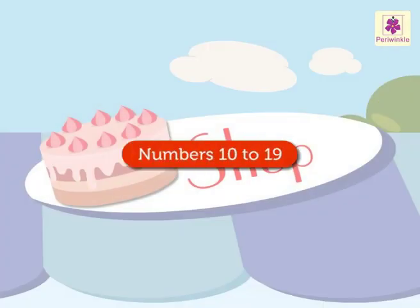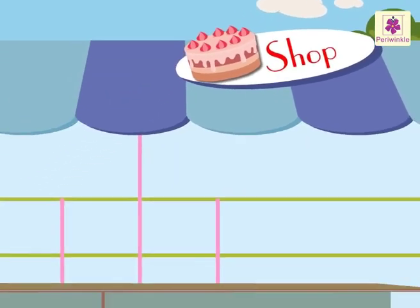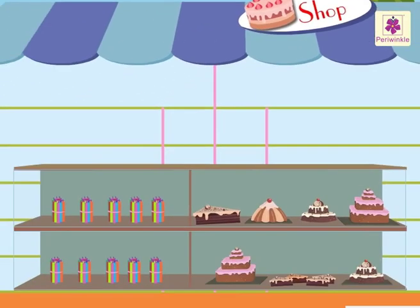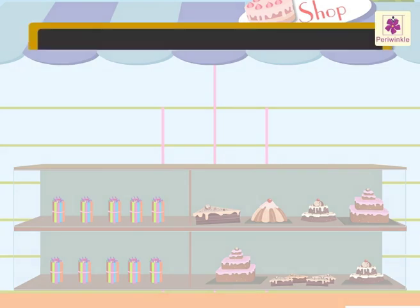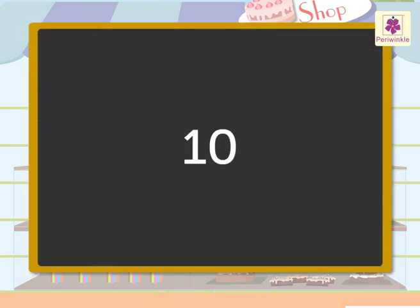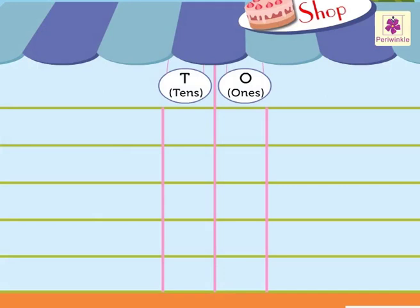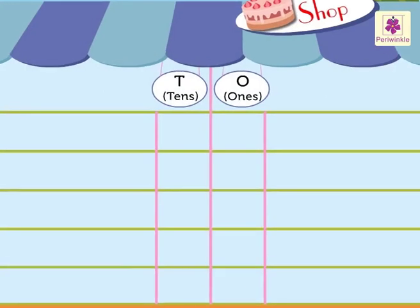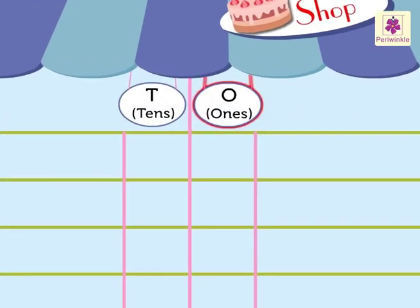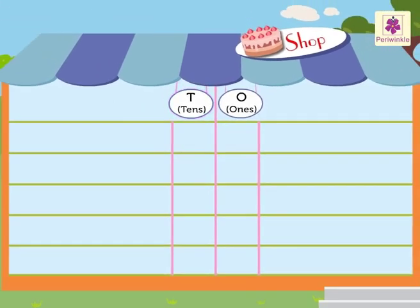Let's learn numbers 10 to 19 with the colourful candles at the cake shop. Number 10 is the first double or two-digit number. Two-digit numbers are placed in the ones column and the tens column of the place value chart, as they have tens and ones.